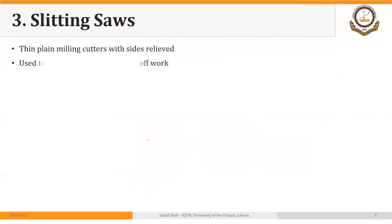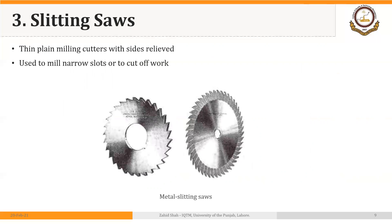Then we have slitting saws. These are thin plain milling cutters with sides relieved. They are used to mill narrow slots or to cut the work into two pieces. They are similar to plain milling cutters but are very thin and have cutting teeth only on the periphery.